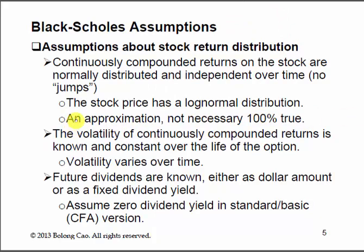The assumption that the underlying stock price follows a log-normal distribution, with no serial correlation and no jumps in stock return, is an approximation. For short periods of time it's a reasonable assumption, but it's not necessarily 100% true at all times. Research papers have been written on option pricing incorporating stock price jumps, but we are not going to that level in this course.